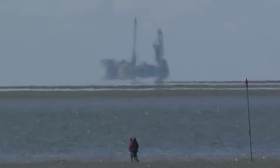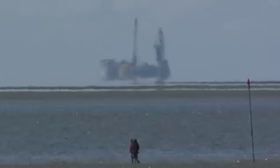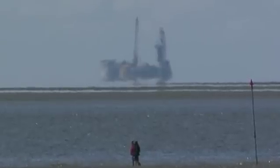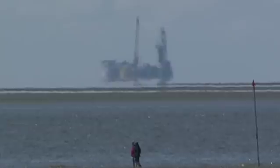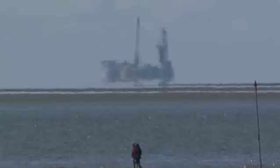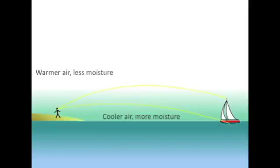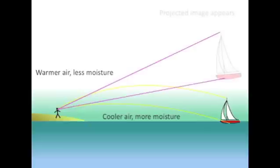The Fata Morgana can look pretty impressive. Its origin lies in the humidity and temperature of air above the water. The cold air is denser close to sea level than high above it. This creates a density gradient, and thus a change of refractive index, just like in our experiment. The light coming from the boat is curved by the air layers, but our eyes think that the light travels in straight lines, so it looks like we're seeing a flying boat.